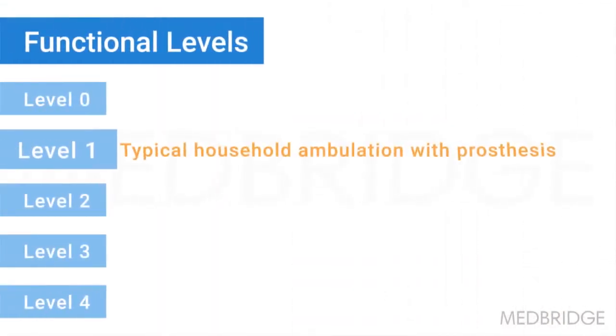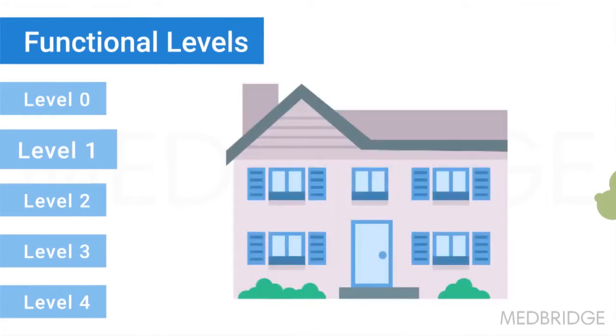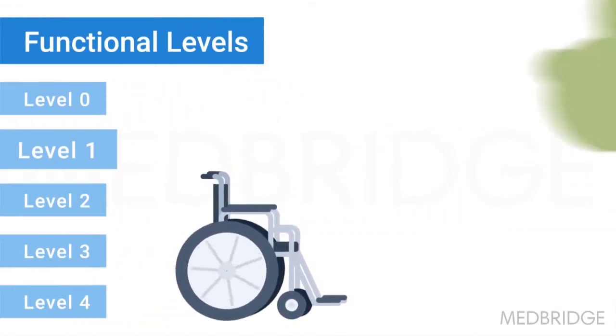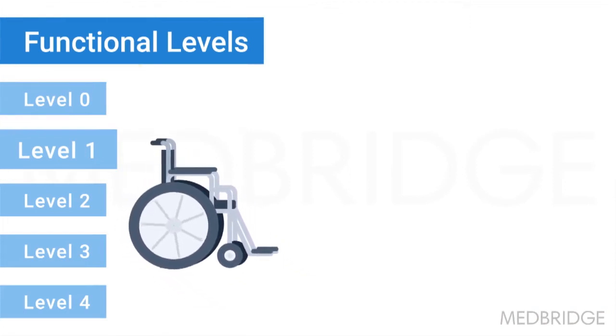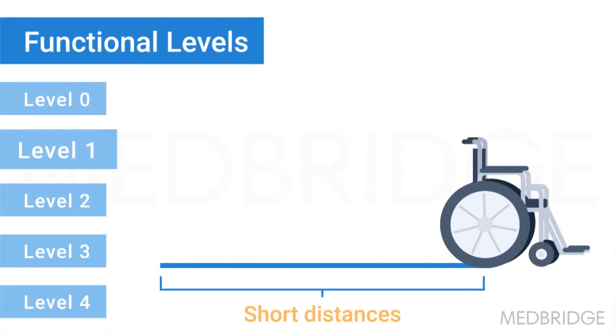A functional level 1 patient is your typical household ambulator. They will use their prosthesis in the house and then use a wheelchair or another assistive device in the community. They can go short distances, not long distances, and will use their prosthetic device on special occasions — their 'Sunday legs' — such as church, a night out, or walking the daughter down the aisle.